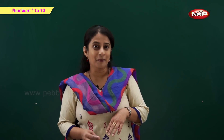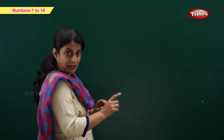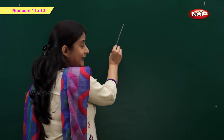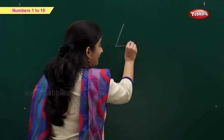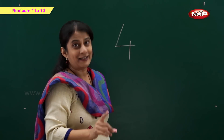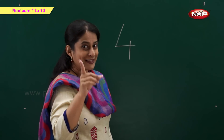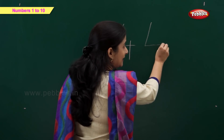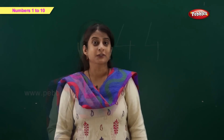Now let's learn number 4. For writing number 4, what we need? We need a slanting line, a sleeping line and a standing line. So 1 slanting line, 1 sleeping line and 1 standing line makes number 4.